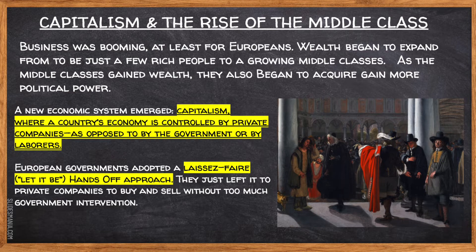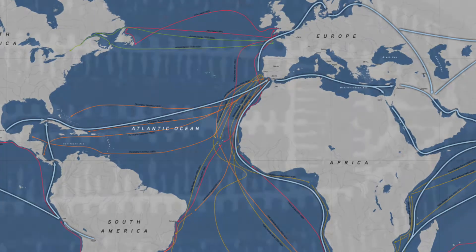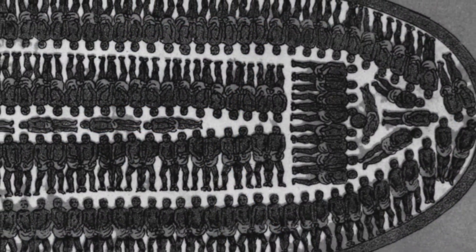We see something called laissez-faire economics develop. Laissez-faire is a French word meaning hands-off or let it be — make sure you underline or bold it in your notes. As a result of the Colombian exchange and the rise of the middle class, we see European countries letting private individuals develop their companies to buy and sell without much government intervention. One item bought, sold, and traded over the Atlantic without much government interference is human cargo through the transatlantic slave trade.